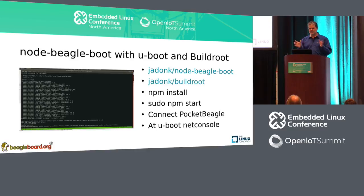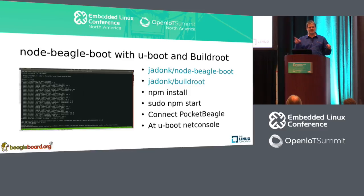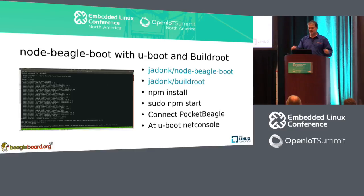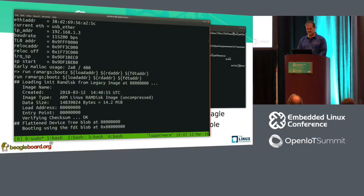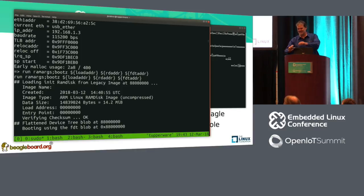For node-BeagleBoot itself, you get into that directory, do NPM install, then sudo NPM start. You do need to point the bin folder into the Buildroot output images folder in order to get to them. Plug in my PocketBeagle and then I'm at the net console prompt. Does anybody think this is going to work?